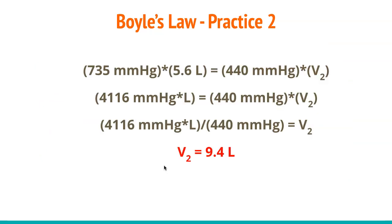Setting up Boyle's Law: 735 mmHg × 5.6 L = 440 mmHg × V2. Note that 5.6 only has two significant figures, so the final answer should also have two sig figs. Multiplying the left side gives 4116 mmHg·L. Dividing by 440 mmHg isolates V2, giving a final answer of 9.4 liters.